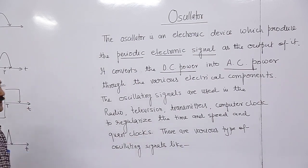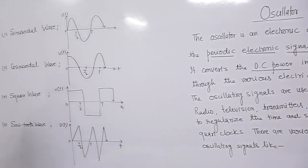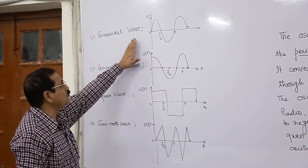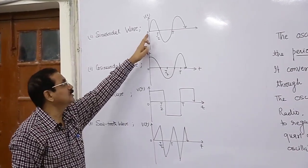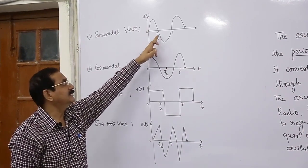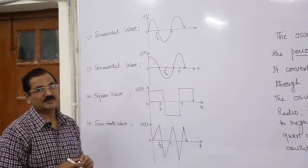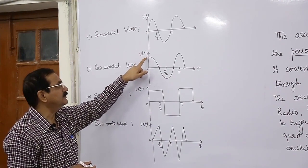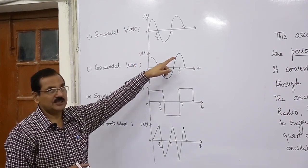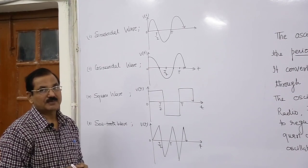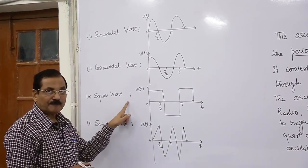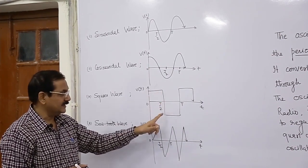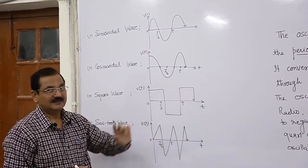There are various types of oscillating signals. The sinusoidal wave: at t=0, amplitude is 0, then there is a change of amplitude with respect to time. The cosine sinusoidal wave: when t=0, amplitude is maximum, then there is a variation with respect to time. The square wave: at a particular time T/2, the amplitude is constant, then drops to 0.